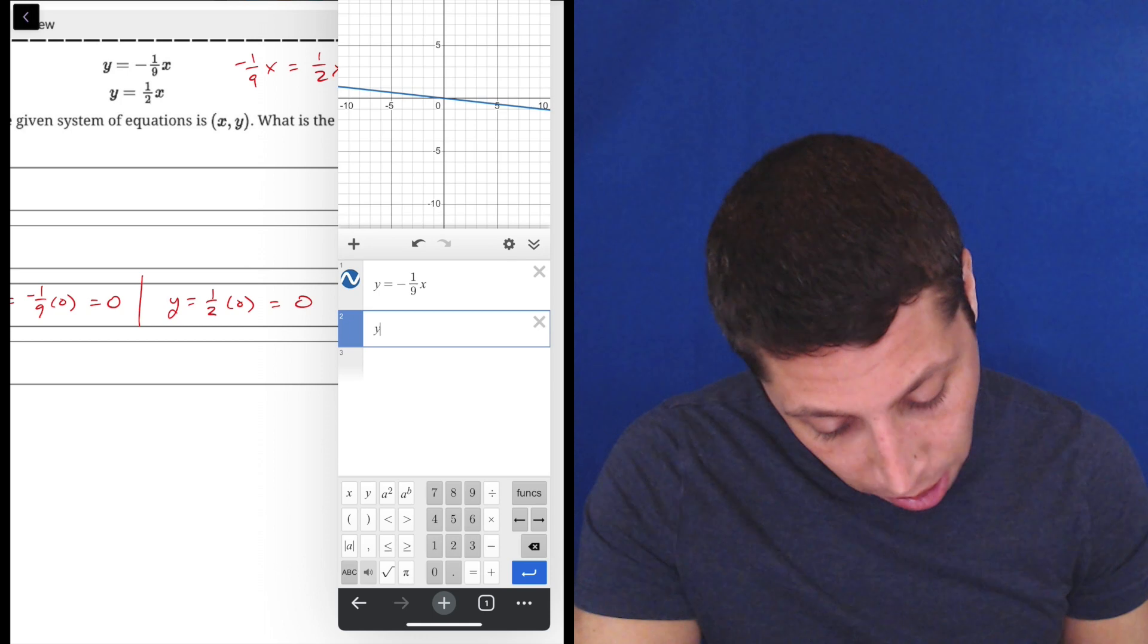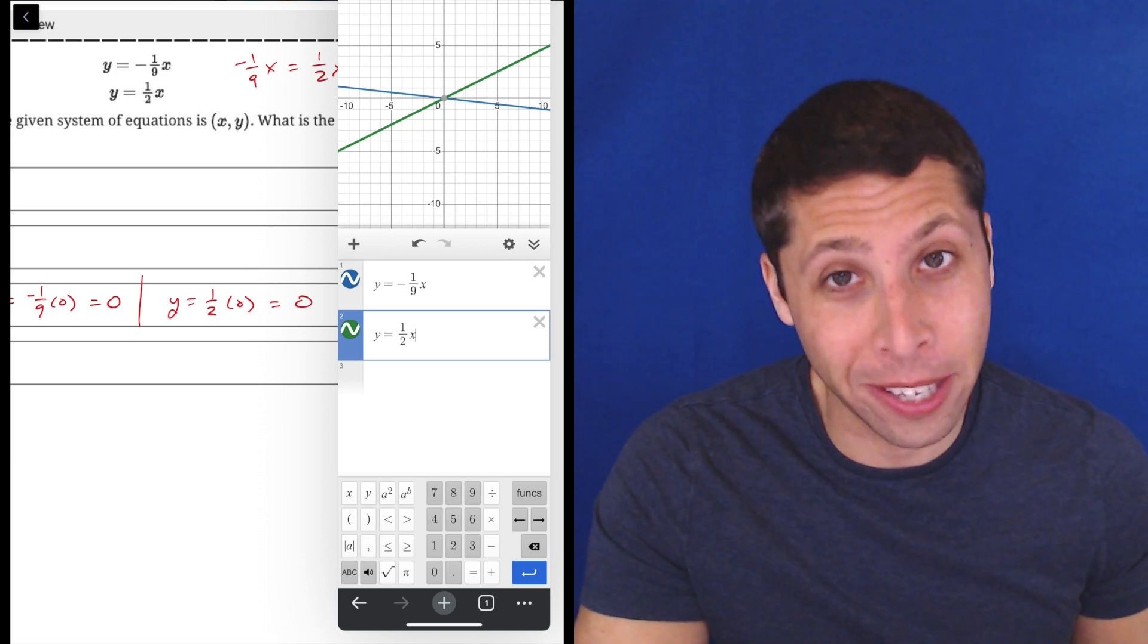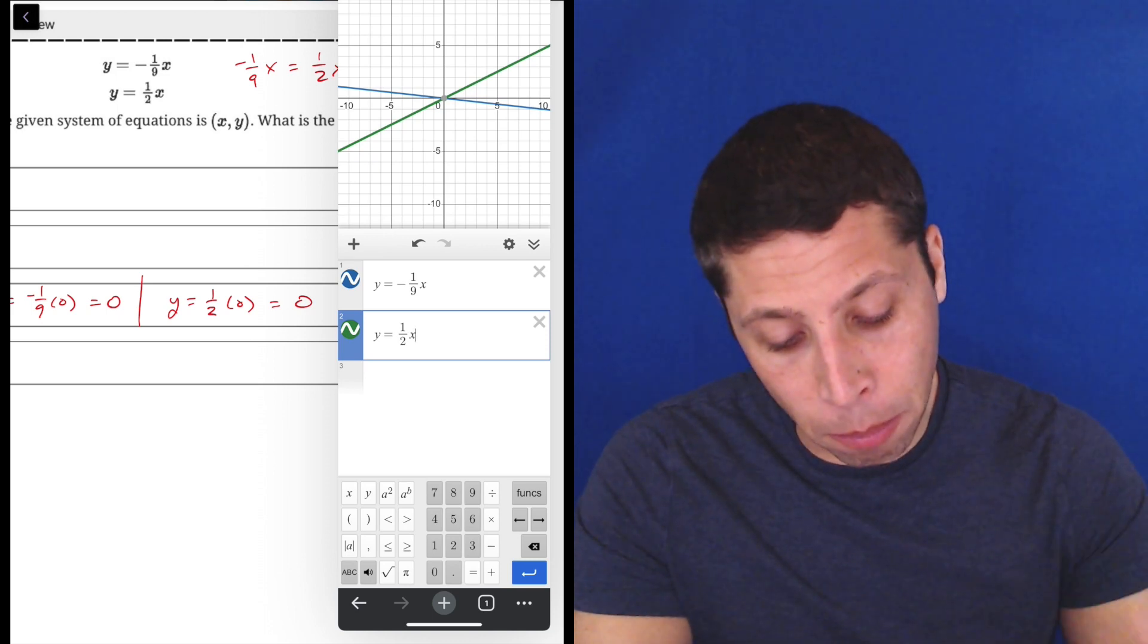Then we do the other, y is equal to one half, tap out, x. We don't want to put that x on the bottom of the fraction. And we see, we have a blue line and a green line here,